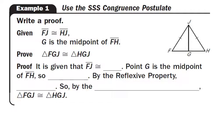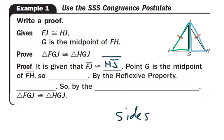So how do we use this in a proof? We have a paragraph proof here. We're given that FJ is congruent to HJ — remember, whenever you say something in a proof, write it on the picture. And G is the midpoint of segment FH. We need to prove that triangle FGJ is congruent to triangle HGJ. We're trying to show that the green and the blue triangle are congruent. Right now, we've got one pair of sides that are congruent.